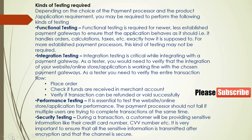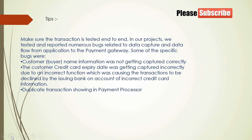During security testing, a customer provides sensitive information like their credit card number and CVV, so it is very important to ensure all sensitive information is transmitted after encryption and that the channel is secure. In testing, we tested and reported numerous bugs related to data capture and data flow from the application to the payment gateway. Specific bugs found: customer name information was not being captured correctly; the customer's credit card expiry date was being captured incorrectly due to an incorrect function, causing transactions to be declined by the issuing bank; and duplicate transactions were showing in the payment processor.